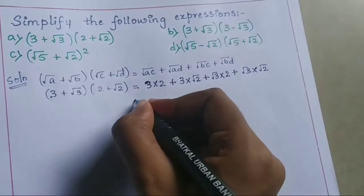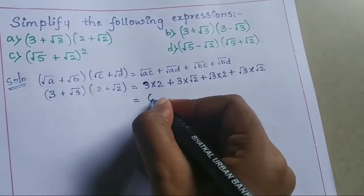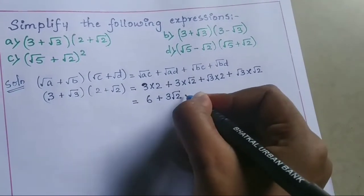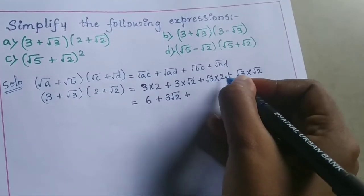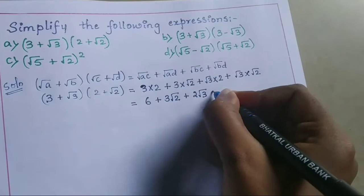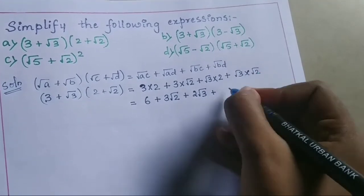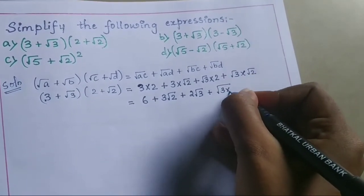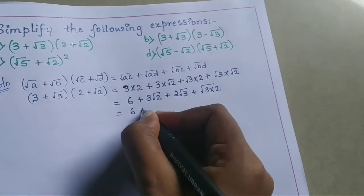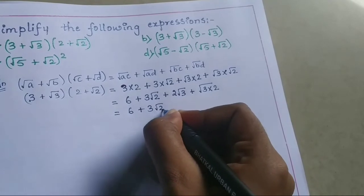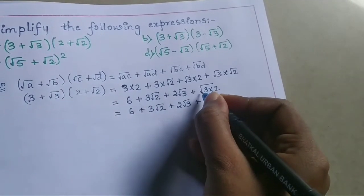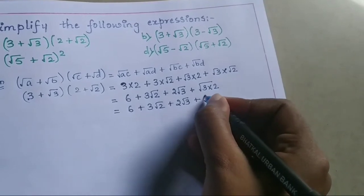Simplifying: 3 times 2 is 6, plus 3 times √2 is 3√2, plus √3 times 2 is 2√3, plus √3 times √2 is √6. So the final answer is 6 + 3√2 + 2√3 + √6.